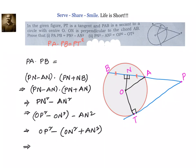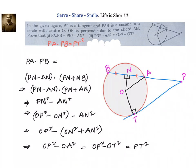In triangle OAN, OA square equals ON square plus AN square. So we can write OP square minus (ON square plus AN square) as OP square minus OA square. But OA equals OT, both being radii, so this equals OP square minus OT square. In triangle POT, OP square minus OT square equals PT square. Therefore PA into PB equals PT square.